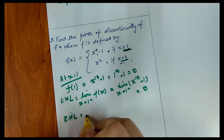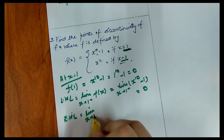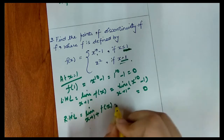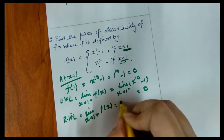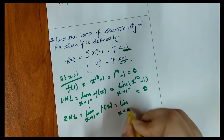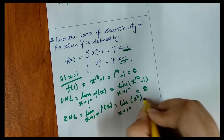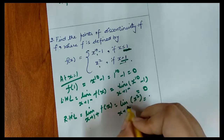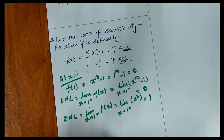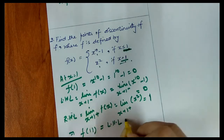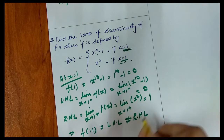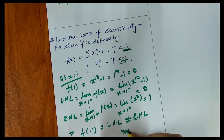Now we find the RHL. When x approaches 1 from the right, our function is x squared, so the limit as x approaches 1 plus of x squared equals 1. You can see that f(1) and LHL are equal but not equal to RHL, so our function is non-continuous at x equal to 1.